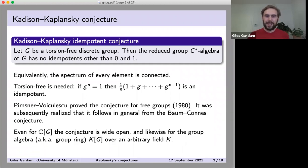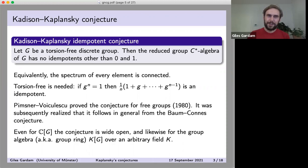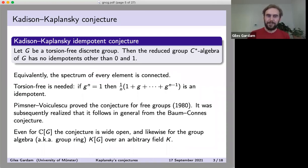We can play the same game with any other coefficients: replace the complex numbers with some field K and ask whether all idempotents in the group ring KG are trivial, i.e., only 0 and 1. Sometimes people prefer to say group algebra; I'll just say group ring but mean the same thing.